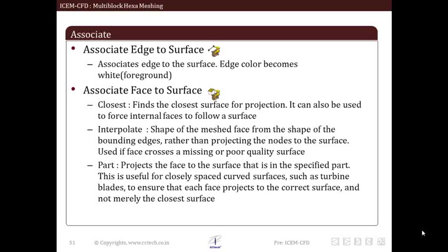Next the interpolate option interpolates shape of meshed face from shape of bounding edges. It is mostly used when any face crosses a missing or poor quality surface. Last one is the part option which projects face to surface that is in specified part. This is useful for closely spaced curved surfaces such as turbine blades.